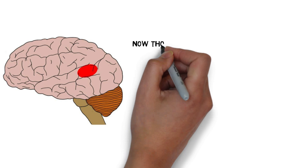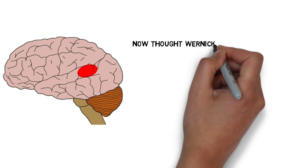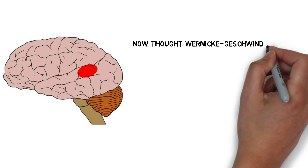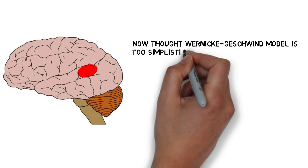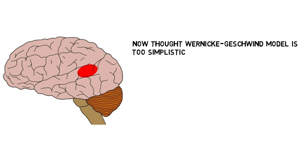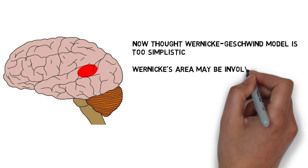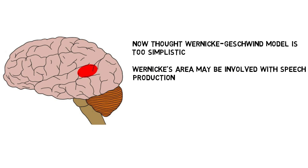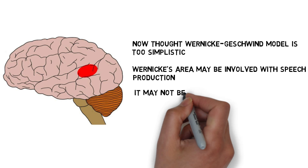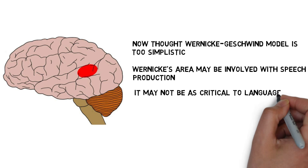It's now thought, however, that this model is too simplistic. Studies indicate that language likely involves widespread networks and cannot be boiled down to a connection between two brain regions. Additionally, evidence now suggests that Wernicke's area may be involved in speech production rather than just comprehension, and some have claimed it may not be as important to language comprehension as once thought.